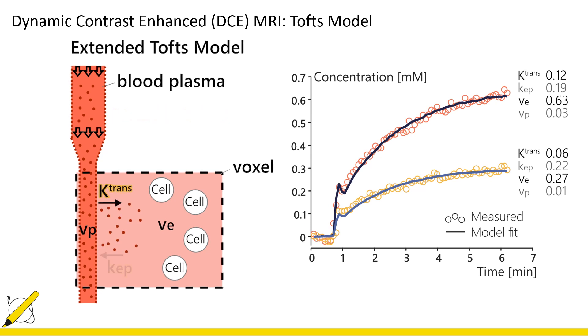To estimate these parameters we need to know two things: the first is the concentration in the voxel, and the second is the concentration in the blood vessel, which is also known as the arterial input function.